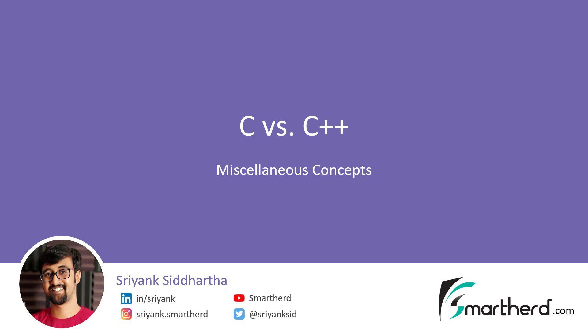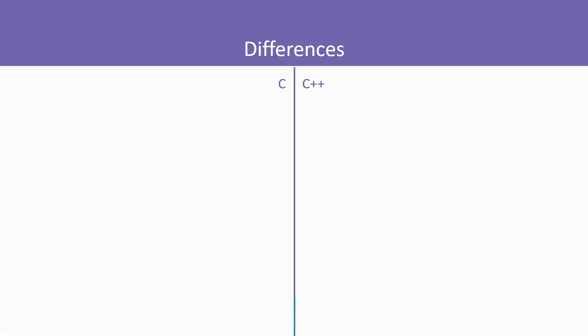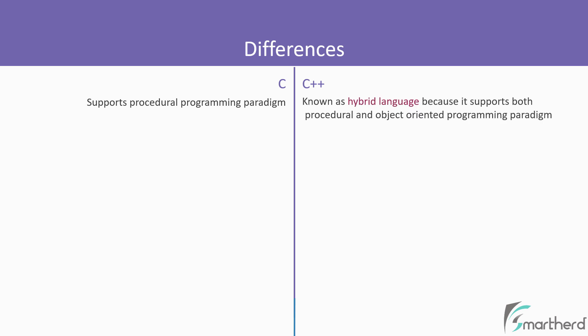In this lesson we will explore the differences between C and C++ as a language. The first major difference between them is that C supports procedural programming paradigms, but on the other hand, C++ supports both procedural and object-oriented programming paradigms. That is why C++ is known as a hybrid language.